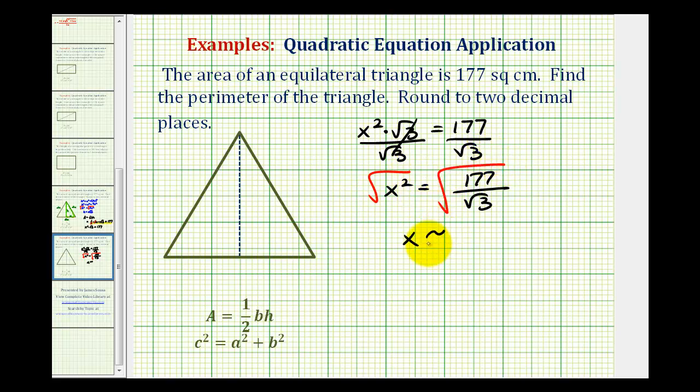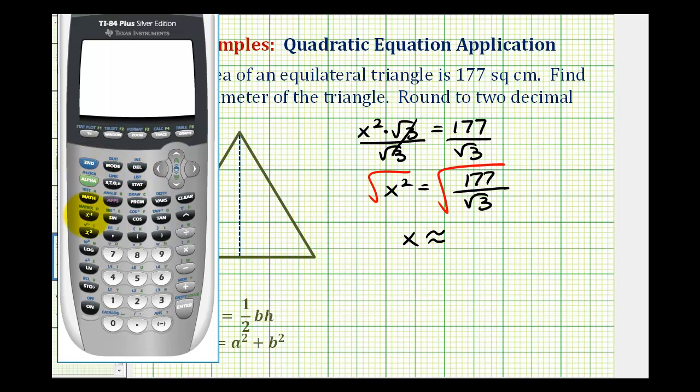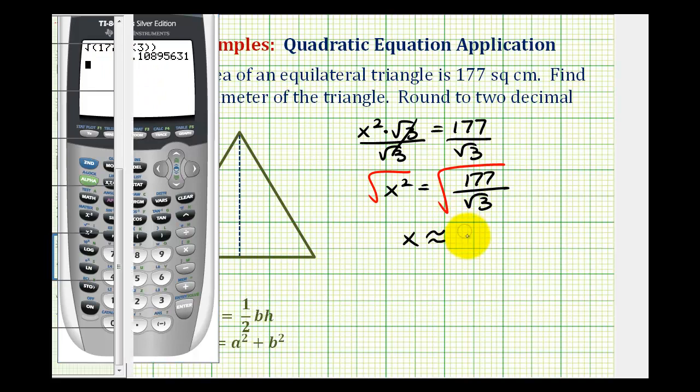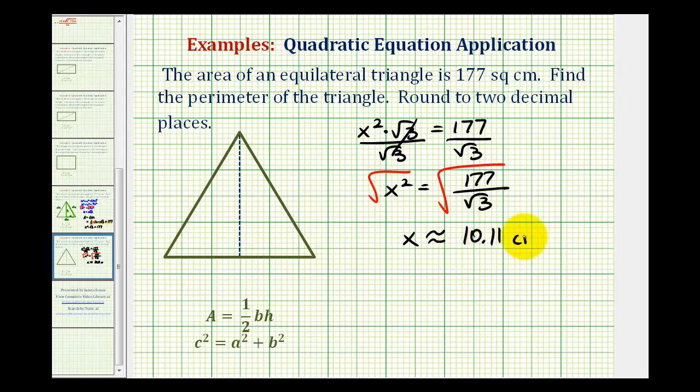So we'll get a decimal approximation for x. We're going to have the square root of this fraction, which is 177 divided by the square root of 3. So we have a parenthesis here for the square root of 3, another parenthesis for the outer square root. So x is approximately 10.11 centimeters.